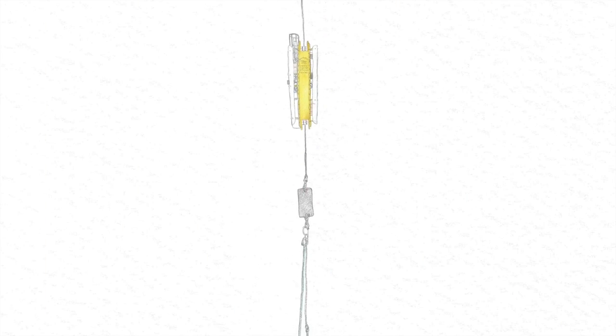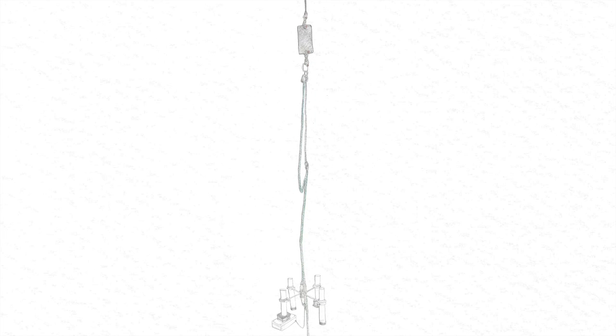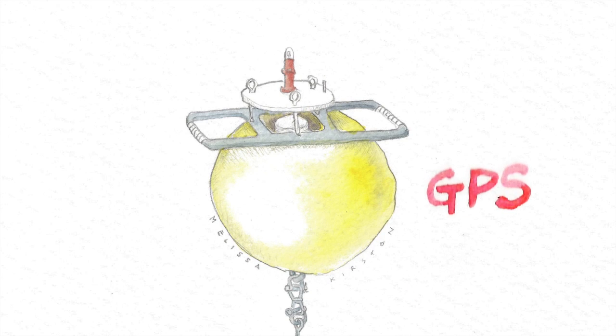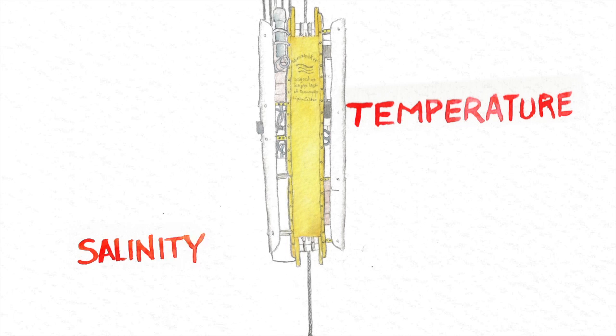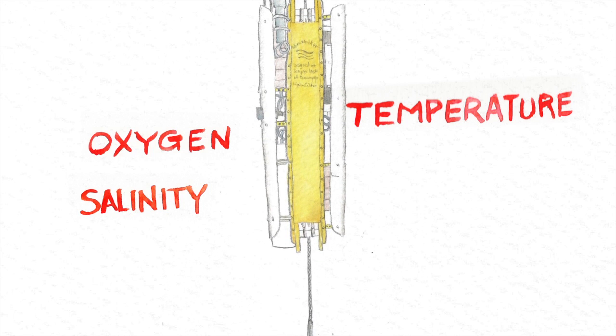One tool we use is the wire walker, which drifts for days carrying a whole array of instruments. A buoy sends a GPS signal, and down below the surface our walker goes up and down a 125 meter long cable, measuring temperature, salinity, oxygen, and sunlight.